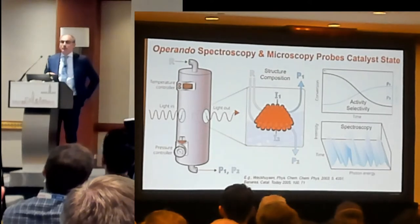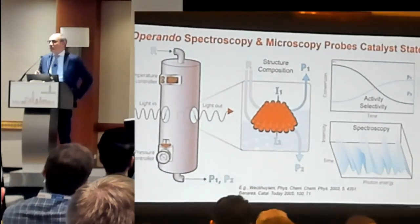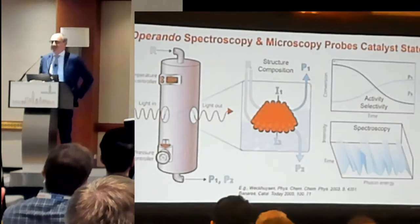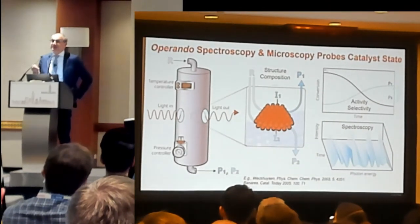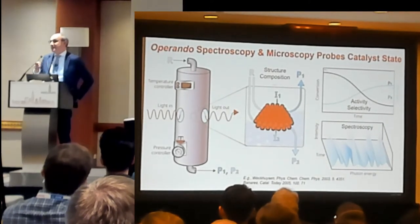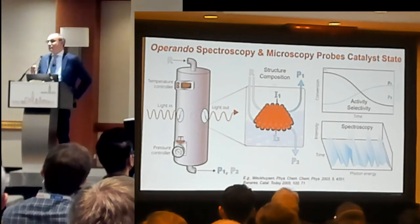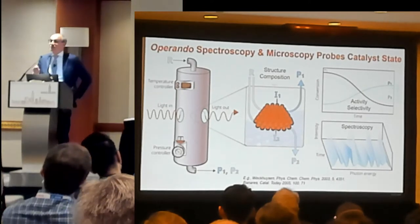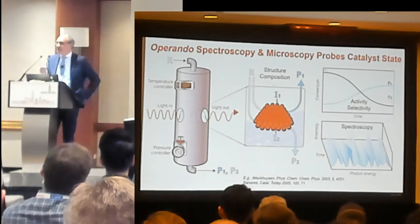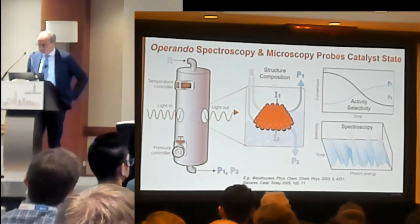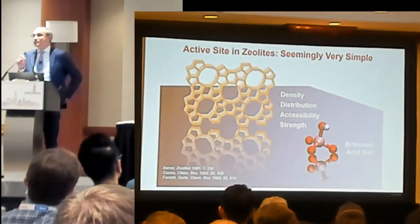Now we are in a session on operando, and some colleagues actually, years ago, started with this term. It is almost remarkable that we now have sessions and other things on this term. As already explained this morning, we have to follow this very well. What we try to do is to bring the spectrometer to the reactor by trying to make no compromises, and by making no compromises you will have to give in certain things, but hopefully we can learn something. What you want to do is make structure-performance relationships — really dive into the system to make correlations of the structure and composition while it's working. Although it sounds simple, it's far from trivial.